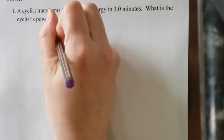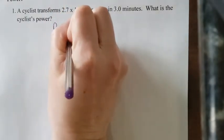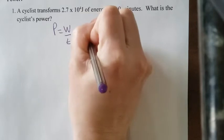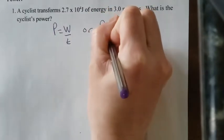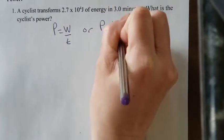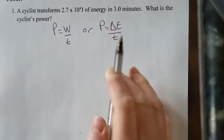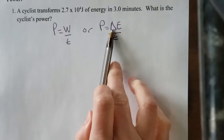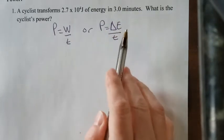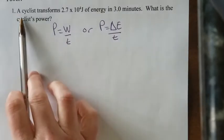So we have two formulas for power. Power is equal to work divided by time, or we can use power is equal to the change in energy divided by time. The triangle means change in energy, so just the difference in energy. Let's look at this example here.